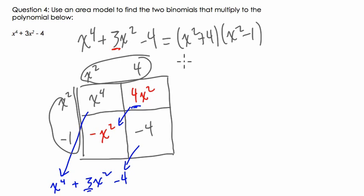Now this actually is another difference of squares problem. So we can break it down further. They don't ask for it. So x squared minus 1 is really x minus 1 times x plus 1. And if you're not sure about that, look at the area model.